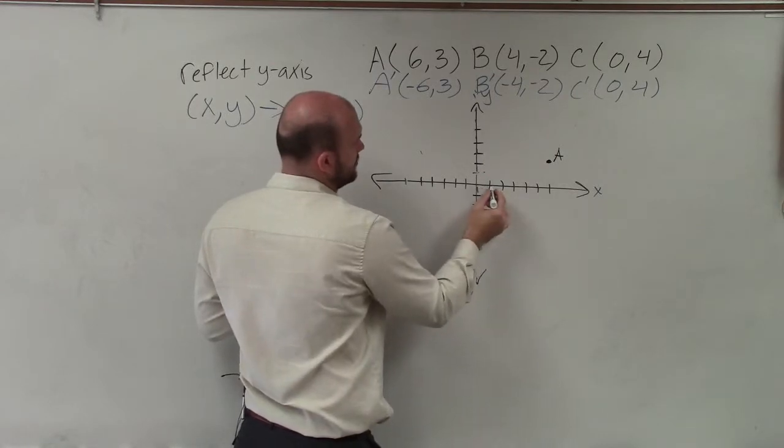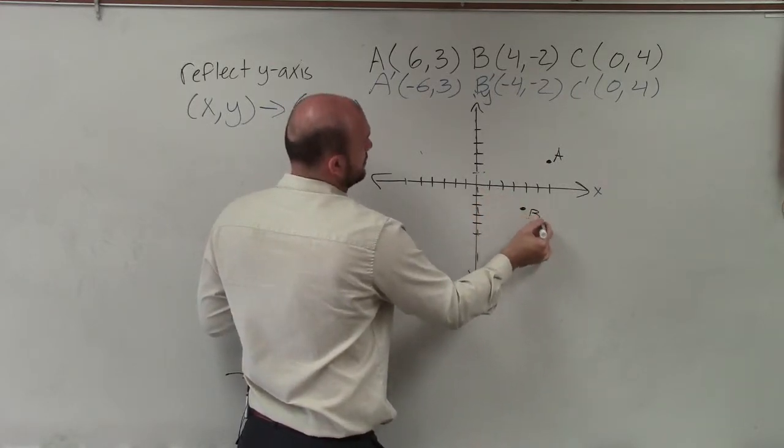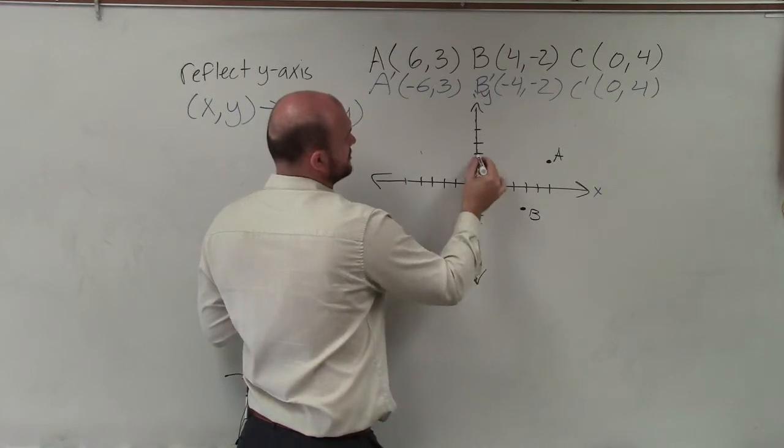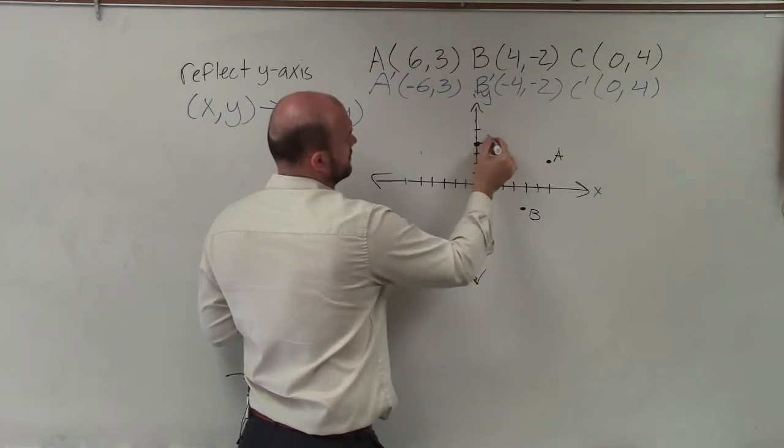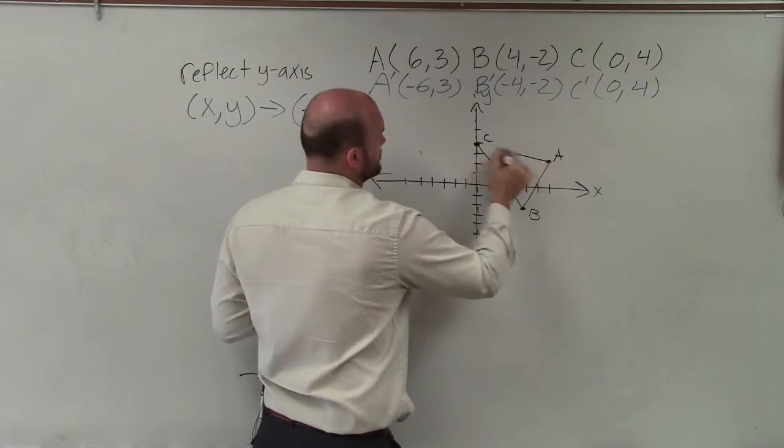B is 4, negative 2, 1, 2, 3, 4, negative 2. And c is 0, 4, 1, 2, 3, 4. So that's what our pre-image looks like.